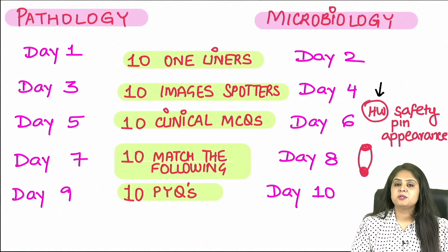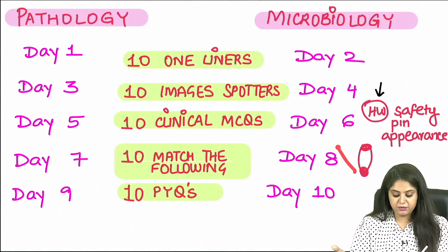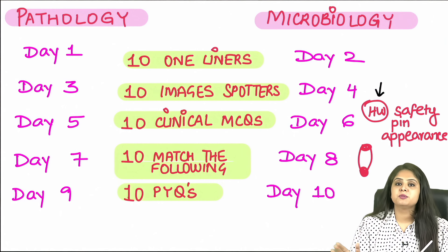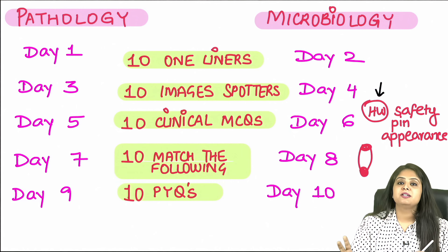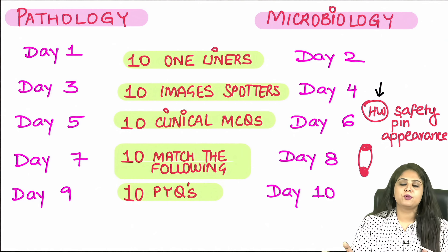For safety pin appearance: one is Yersinia pestis, and apart from that it is also Vibrio parahemolyticus. Then we have the two Burkholderias — Burkholderia mallei and Burkholderia pseudomallei — and then the two organisms which cause genital infections, that is Haemophilus ducreyi as well as Klebsiella granulomatis. All of these show the safety pin appearance, and all of you gave the correct answer.